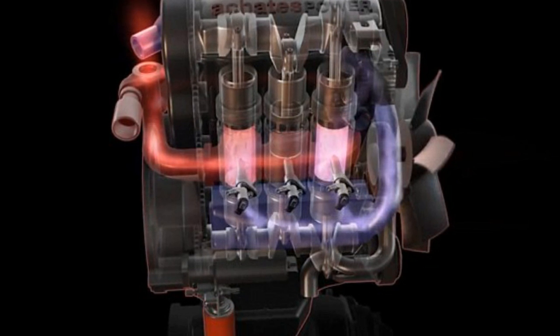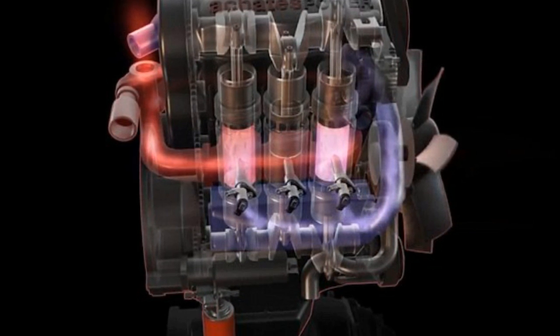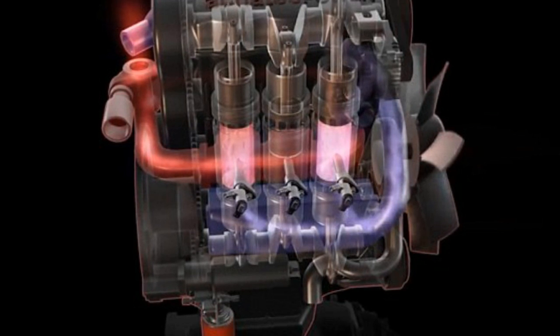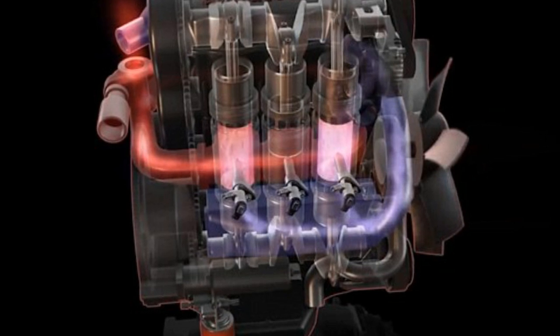San Diego-based Achates Power claims that it's revitalized a different World War II-era design that is cheaper, smaller, lighter, and could be 30% more fuel-efficient.